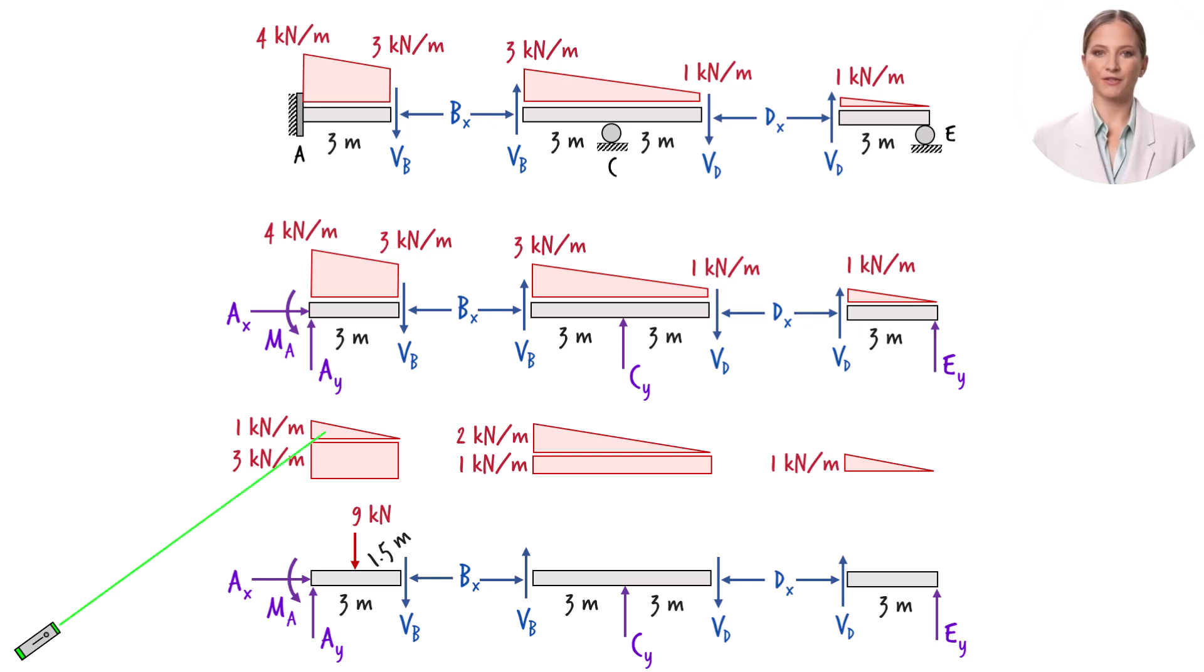We can replace this triangular load with a point load of 1.5 kN, representing the area of the triangle. The load is placed at the geometric center of the triangle, located one meter to the right of point A.